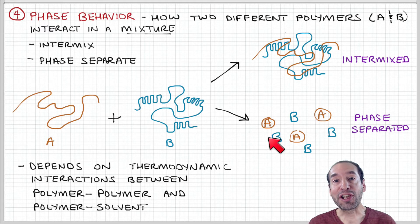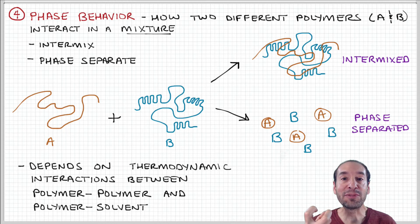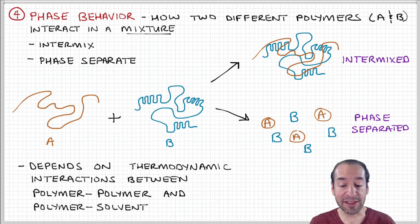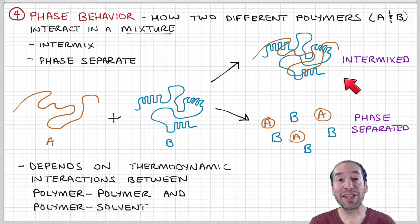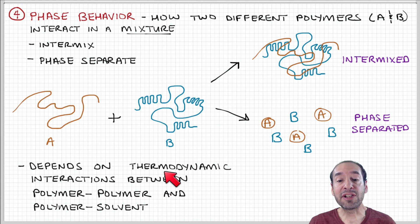Phase separation would be undesirable if you're trying to make a material with uniform properties throughout. You might say, I want to make something with some softness so I'll add one polymer, but I also want some rigidity so I'll add a more rigid polymer and get properties in between. Well, it's not that easy. It turns out intermixing of two polymers is not really the normal thing you encounter. This is why we need to understand this very carefully — making blends is critical to understand, and it has to do with the thermodynamic nature of these interactions and the chemical structure of these two different components.